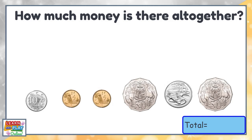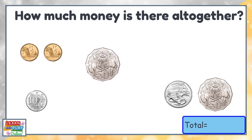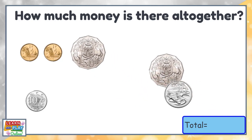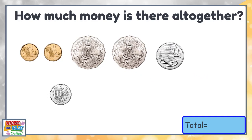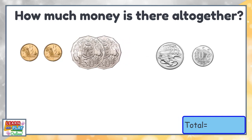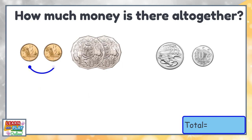How much money is there altogether? Remember the first step — let's order them. Now before we start counting, I'm going to group the two 50 cent coins together and count them with my two dollar coins, because two 50 cent coins will make one dollar. Two dollars, four dollars, five dollars.